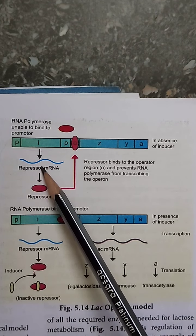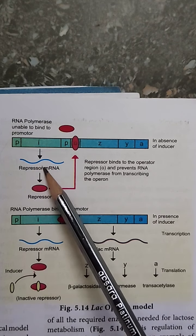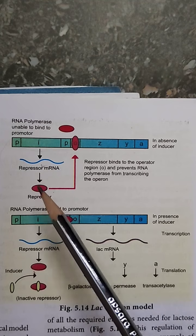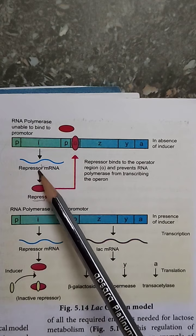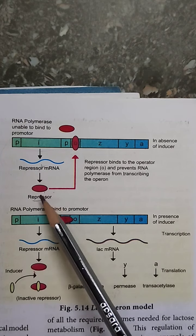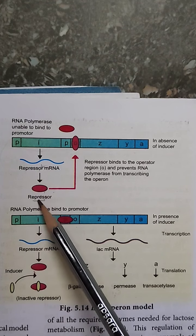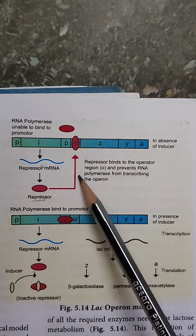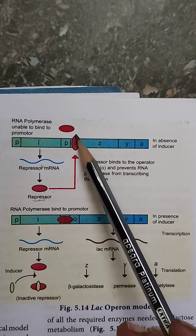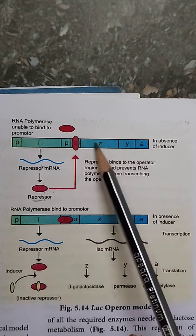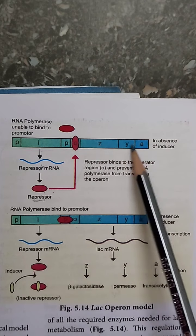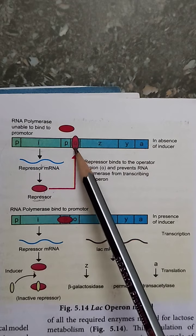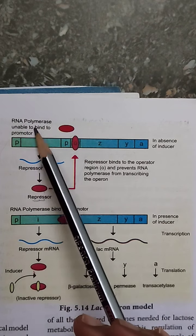This repressor protein binds with the operator region. When the repressor protein binds with the operator, the structural genes do not produce enzymes because the process is being stopped — it is a repressor. RNA polymerase is unable to bind with the promoter. So since the repressor protein is bound to the operator, RNA polymerase cannot bind with the promoter region.